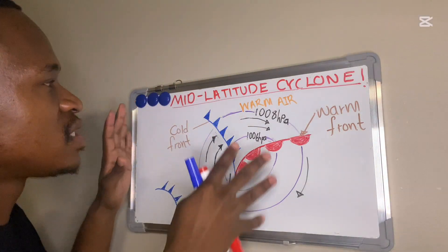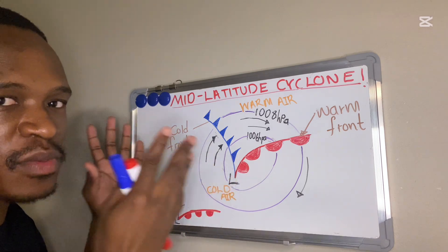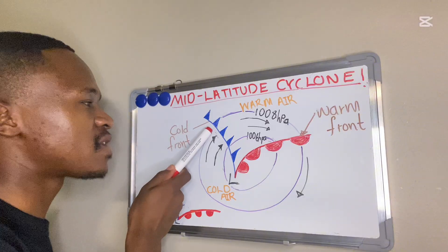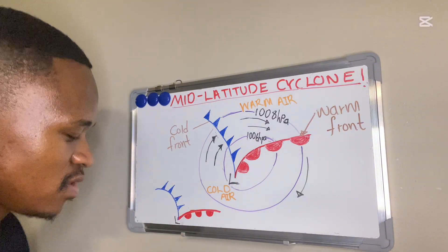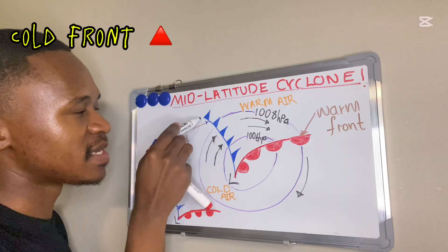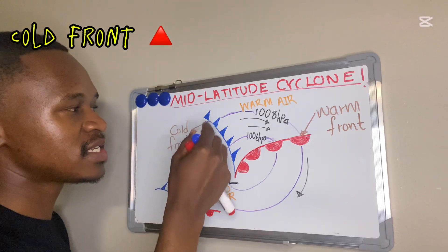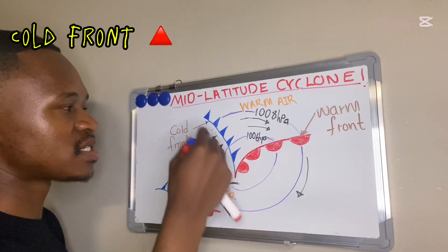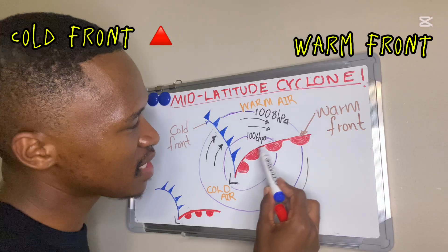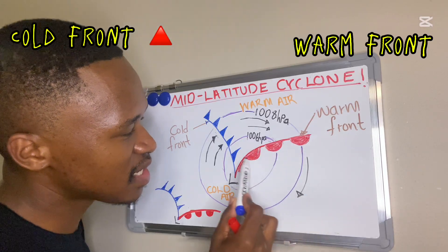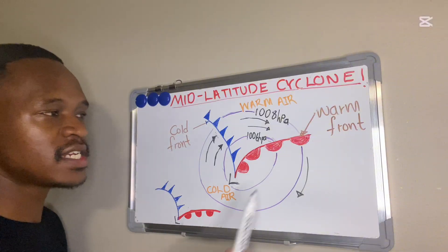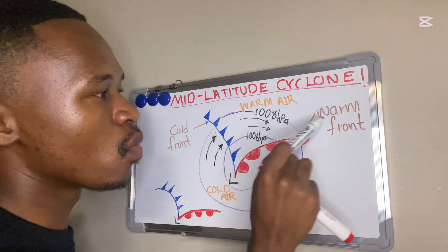This is how you see your mid-latitude cyclones on a map. A mid-latitude cyclone has a cold front and a warm front. The cold front is represented by triangles along a line — in blue. For our warm front, we have semi-circles along a line — in red.